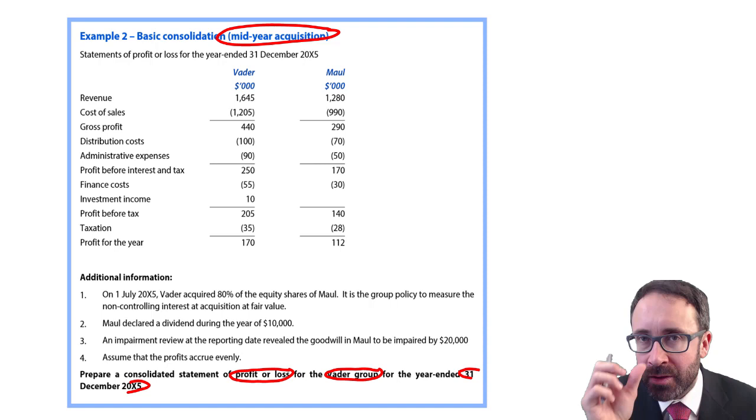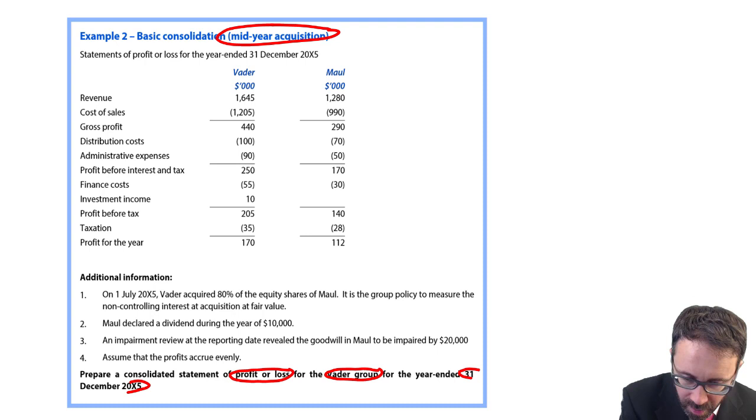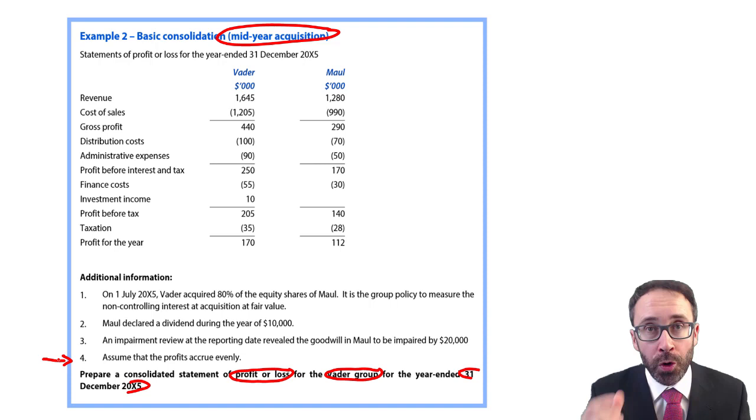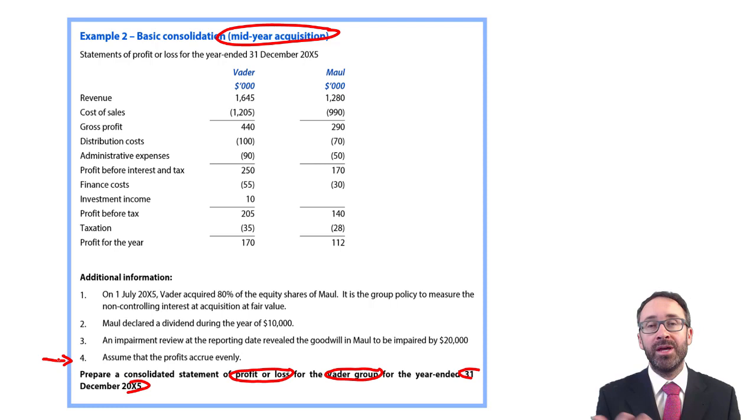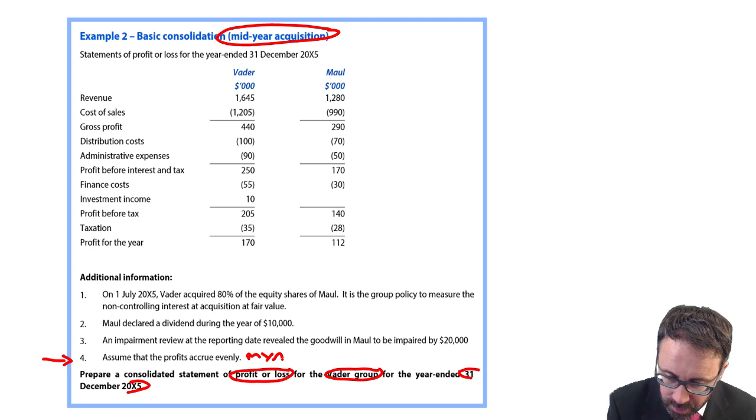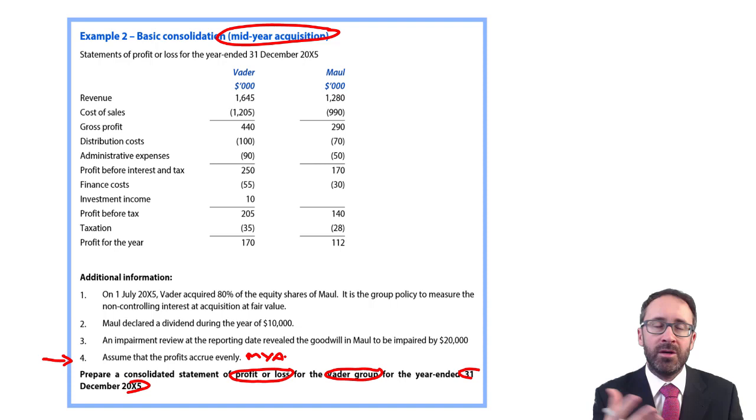How do you identify if there's a mid-year acquisition? It effectively tells you without saying there is a mid-year acquisition within this question. If you look at the final piece of additional information, it says assume that your profits accrue evenly. If your profits are accruing evenly, the reason why they're telling you that is because you're going to have to prorate the revenues and costs. If they're accruing evenly, the easiest way to do it is to take a number of twelfths.